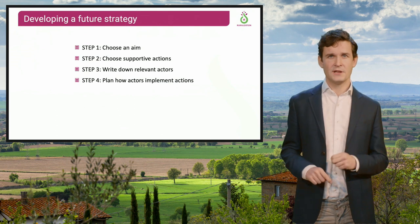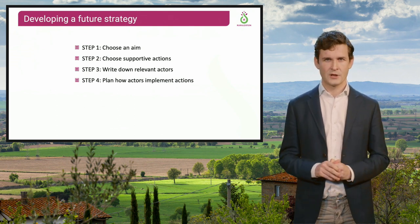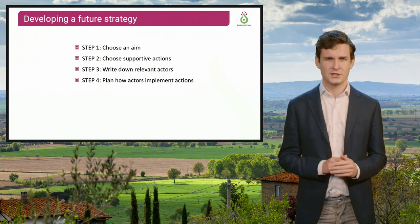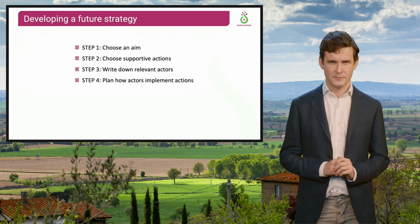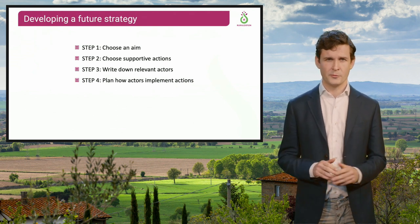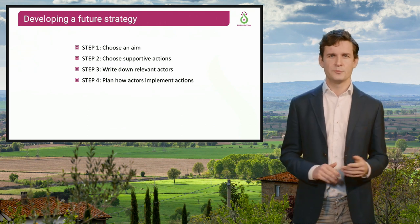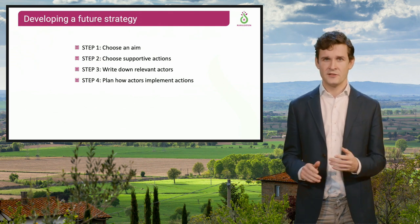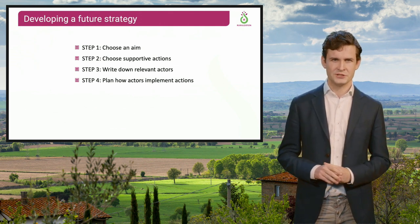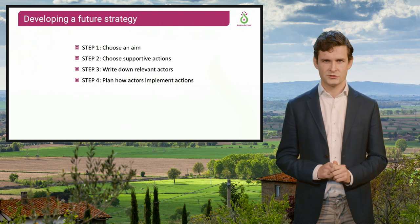A second step is to think of several actions that can contribute to achieving this aim. A third step is to write down which actors and organizations may impact the way you can achieve the aim. These actors and organizations may come from both inside as well as outside the region. It is important to think about whether these actors have the power to change matters and if they are likely to support the strategy. If not, one must think if and how they can be influenced to support the strategy.